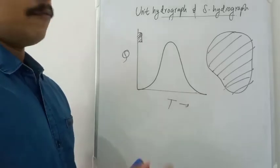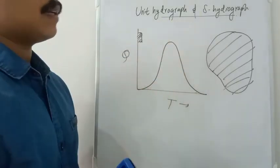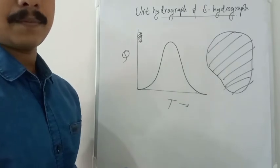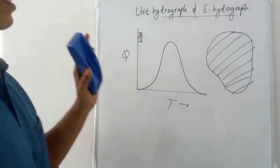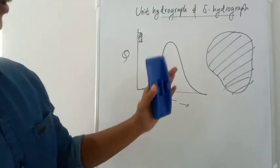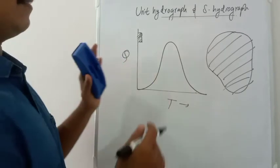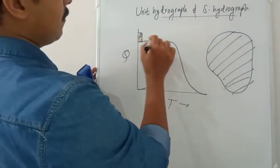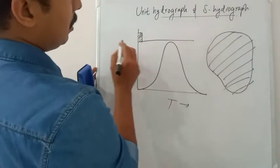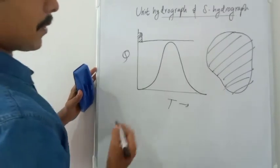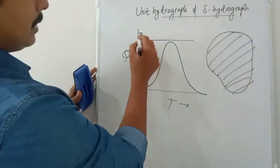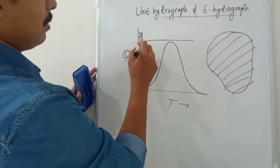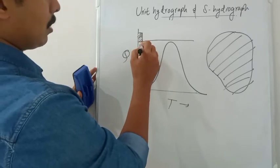Now, what is an S hydrograph or S curve? An S curve is a hydrograph which results from an infinite or indefinite period of continuous rainfall of a specific duration — for example, one hour — and one centimeter effective rainfall continuously applied.